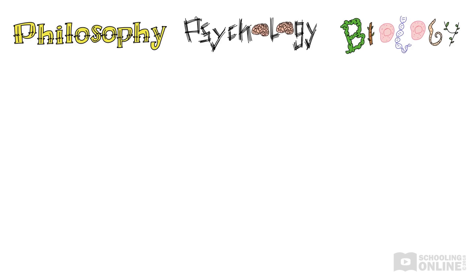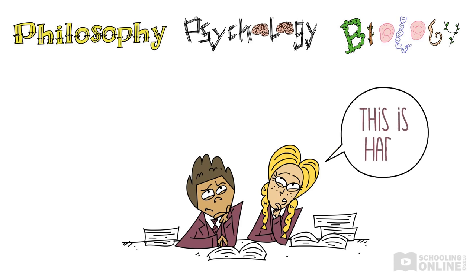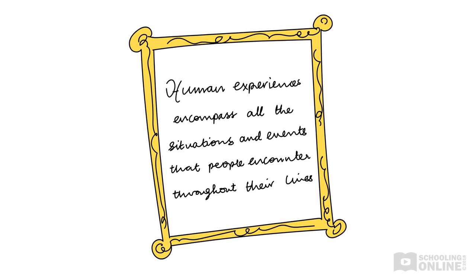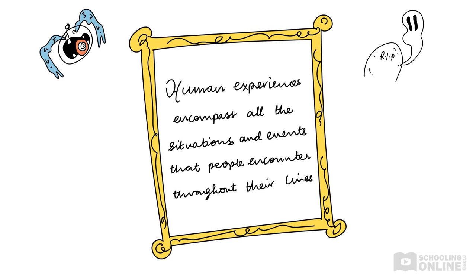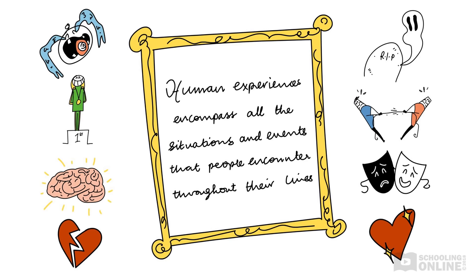So far, we have looked at important philosophical, psychological and biological theories that try to explain what it means to be human. You can see that defining human experience is an incredibly complex, broad and open-ended question. People use all kinds of different ideas from psychology, philosophy and biology to understand our experiences. Here's our broad definition: human experiences encompass all the situations and events that people encounter throughout their lives — think about birth and death, struggles and achievements, thoughts and emotions, relationships and conflict. All these diverse experiences are part of what makes us human.